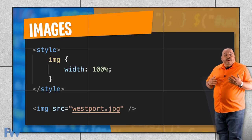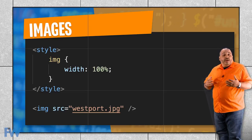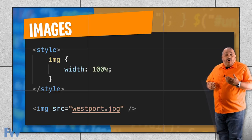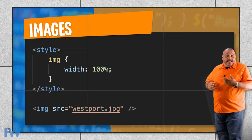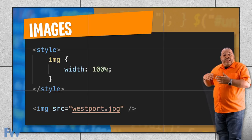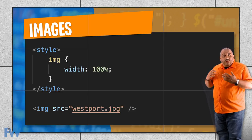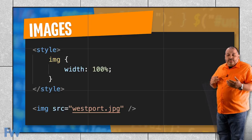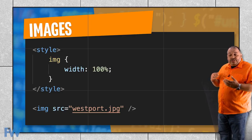Even with our viewport set up, we still need to set up our images to be responsive. Here's the code that we use — it's pretty straightforward. All we're doing is in the stylesheet, setting the images to a width of, in this case, 100%. The key is we're using a percentage-based width, not a pixel-based width. So this way it's going to fill 100% of the viewport on any size screen. And you can see this is applied to the image tag, just like the image tag you see here in the code.